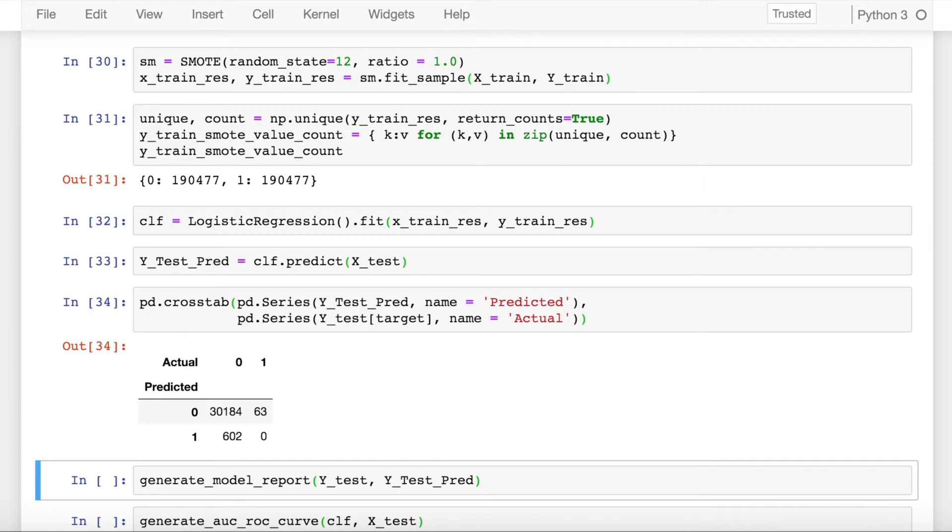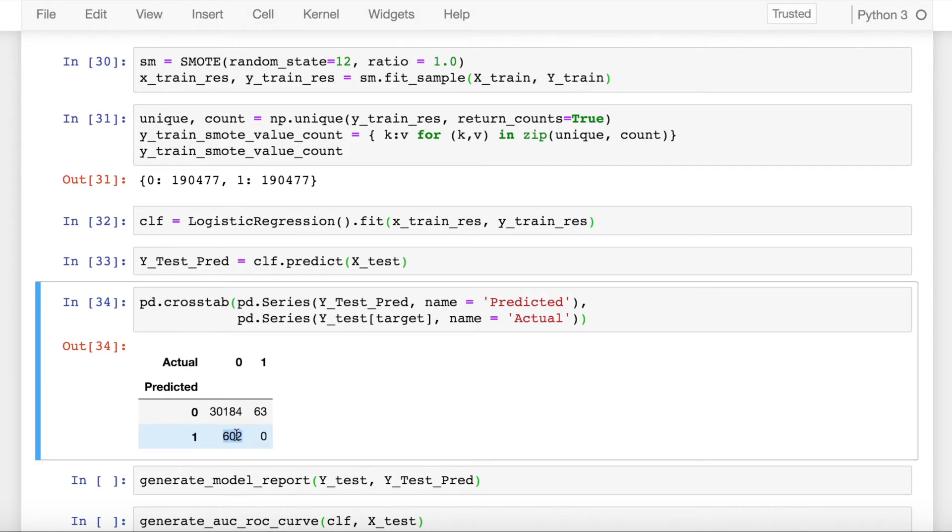So I have Y test predicted as well. Once I look at the confusion matrix, as you can see, there are good amount of false positives in the system, which is what I don't want in my setup. So is there a way to tackle it? Yes, which we'll talk in sometime. But that's how you kind of do SMOTE at the topmost level.